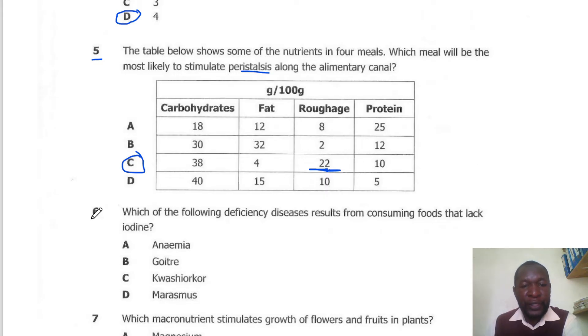Question 6. Which of the following deficiency diseases results from consuming foods that lack iodine? When the body is lacking iodine, an individual suffers from a goiter. So the correct answer here is B.